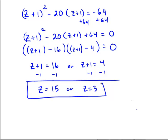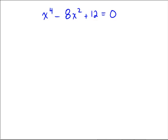Okay, one more for you to maybe try on your own here. Try x to the fourth minus 8x squared plus 12 equals 0. Assuming you paused and gave it a shot here.